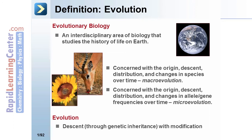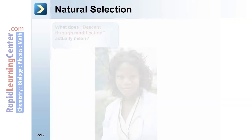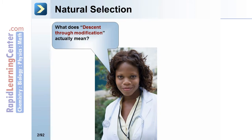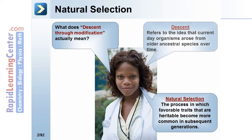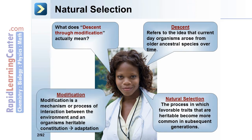Evolution in a nutshell is descent through genetic inheritance with modification via natural selection. Natural selection is the process in which favorable traits that are heritable become more common in subsequent generations. Descent refers to the idea that current-day organisms arose from older ancestral species over time. Modification is a mechanism or process of interaction between the environment and an organism's heritable constitution.